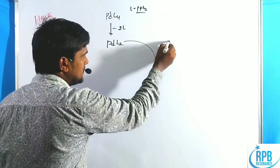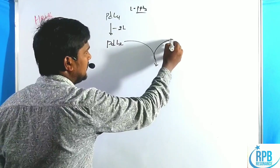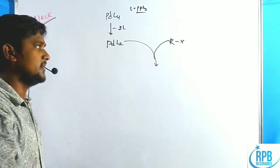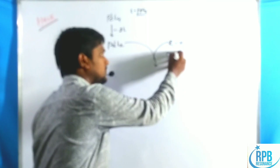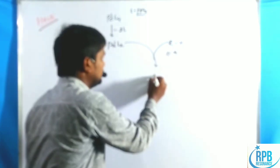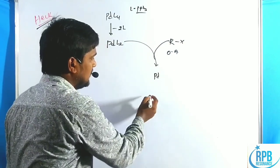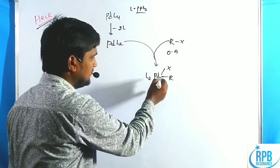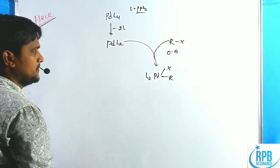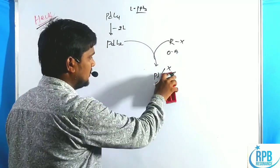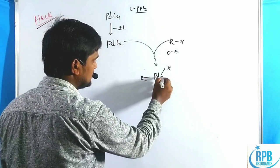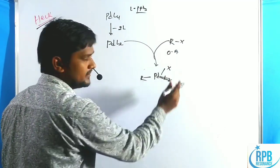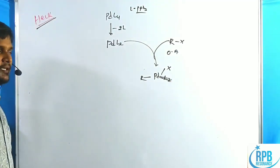In the first step, the alkyl halide undergoes oxidative addition to the palladium(0) complex, giving a complex of the form Pd(L₂)(R)(X), where R is the organic group and X is the halide.